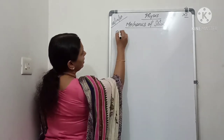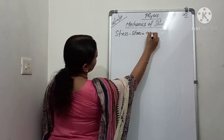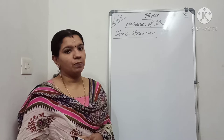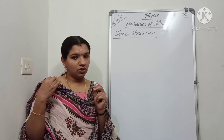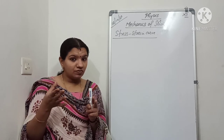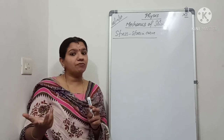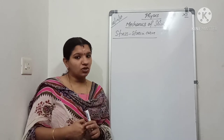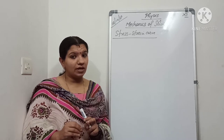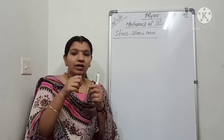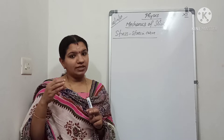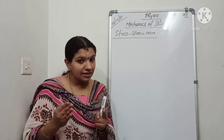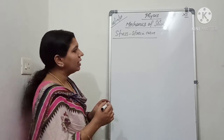Our topic is the stress-strain curve. For that we are taking a metallic wire. When you apply a force to a body, that force is known as the deforming force. That particular object will deform or change its shape or size. There is a restoring force developed inside the body in order to come back to its original position. That restoring force acting per unit area is known as stress. For example, if you take a rubber band and stretch it, you are applying a deforming force and the rubber band develops a restoring force. That restoring force per unit area is the stress.